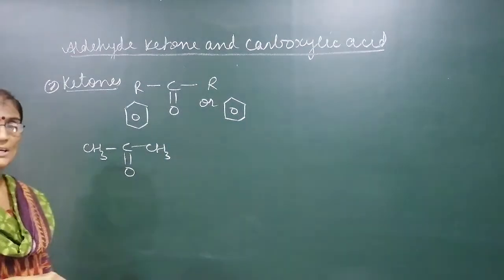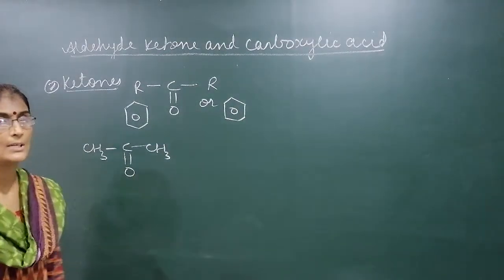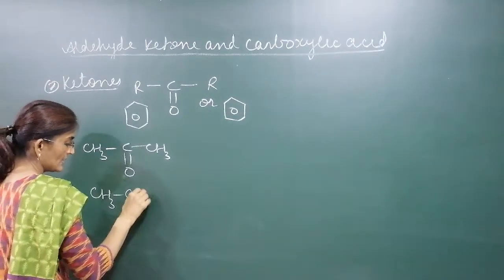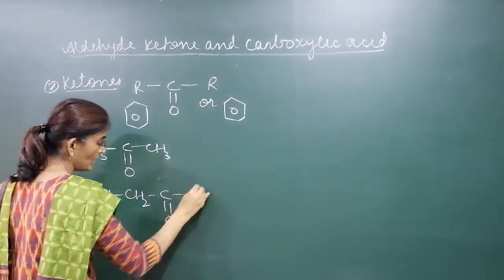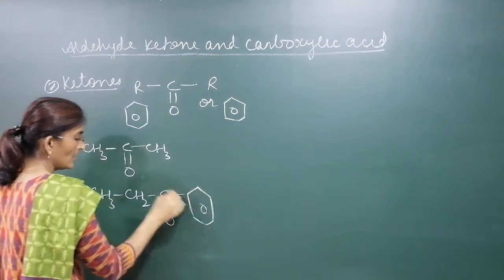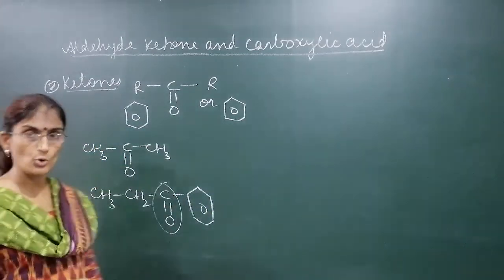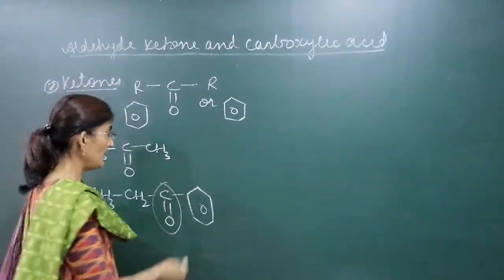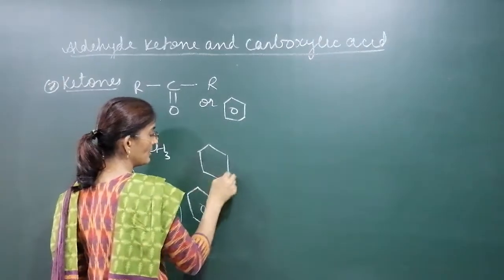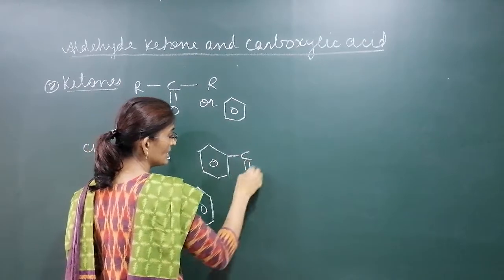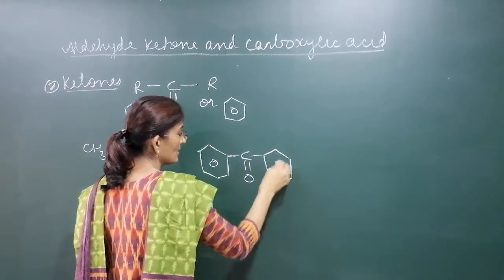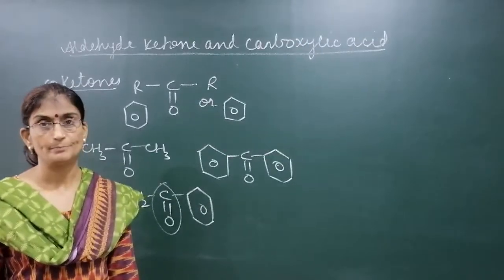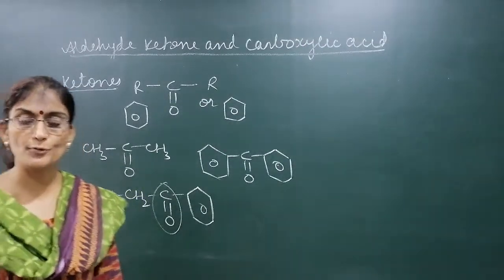The first member of the ketone family contains 3 carbons: propanone, also called acetone — CH₃–C(=O)–CH₃. We can also have CH₂–C(=O)–aromatic ring. If a compound has a C=O group with both sides occupied by carbon groups, we can say it is a ketone. They may have both sides as aromatic rings. We just need to identify the functional group — the C=O group — to recognize a ketone.